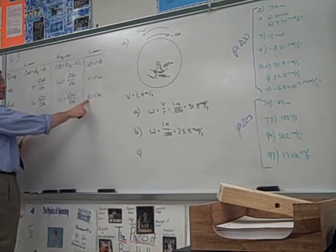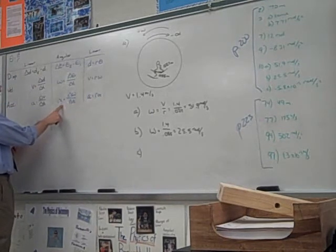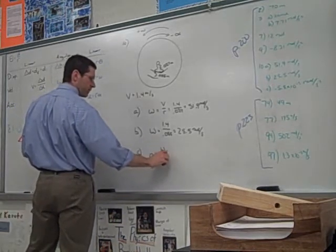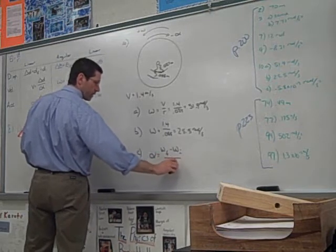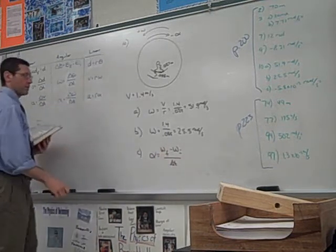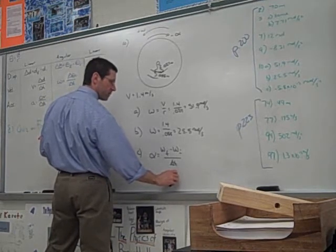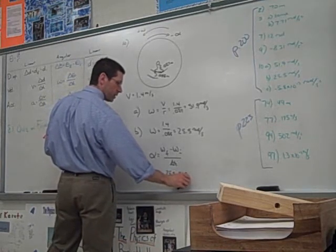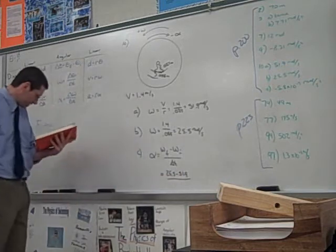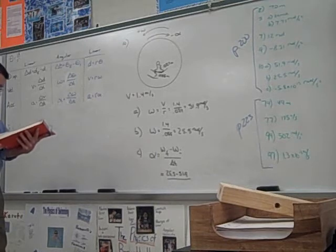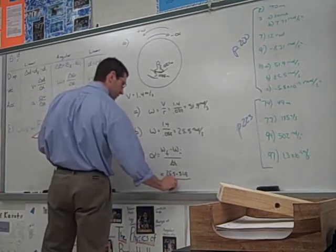We don't know the linear acceleration. So, we've got to find alpha using the two angulars we've got. So, alpha will be omega F minus omega I over time. Right. That's delta omega. So, it's going to be 25.5 minus 51.9 over. It says it does that in 76 minutes. So, that converts to 4,560 seconds.